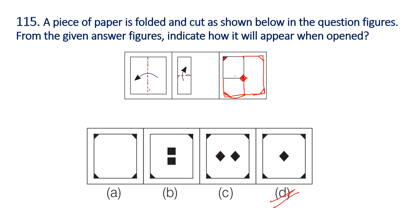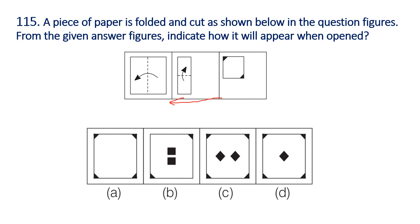Clear — option D. Paper cutting questions are very easy. The unfold is correct. Reverse the same way. We will unfold and make it clear. Cut the same way along this edge, then open. So this is the answer.